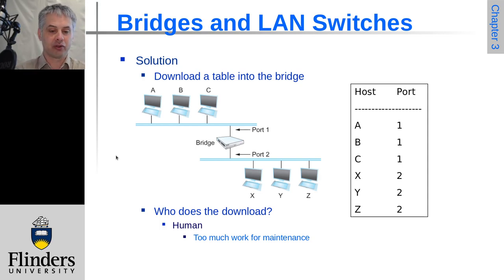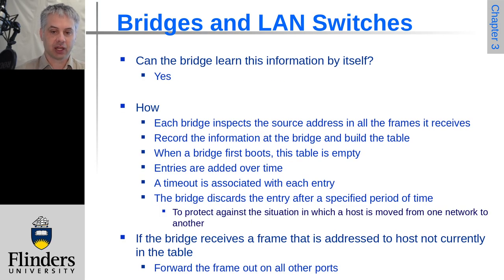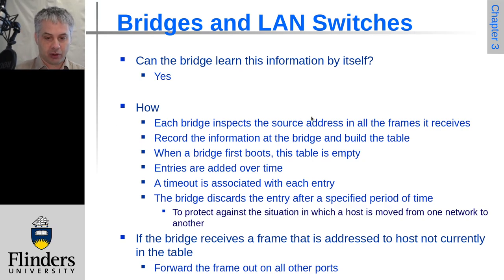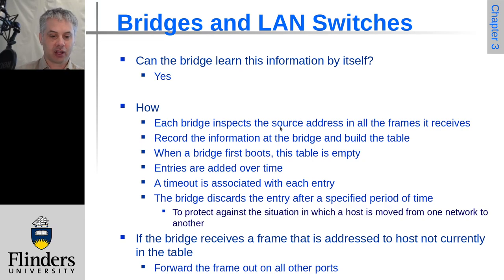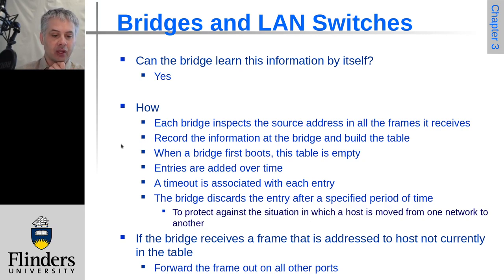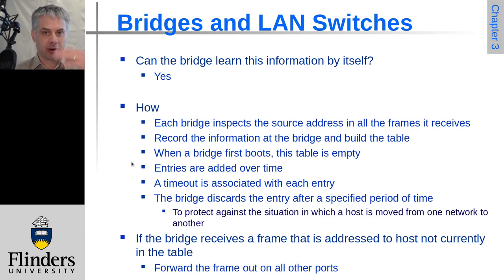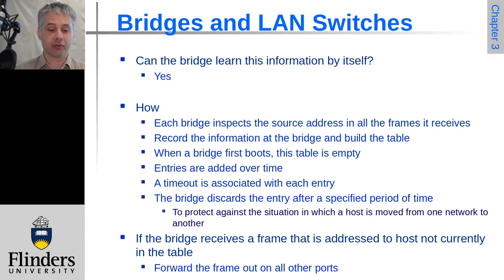A fixed table works perfectly, but it's a pain to maintain because whenever a host moves, is added, or removed you have to update the table on the bridge. The bridge actually has all the information it needs already. If the bridge looks at the source address in every frame, it can record which port that source came in on, and build a table of where each device is. The first time a node sends a frame the bridge learns about it, and a timeout ensures that if a node moves it will be removed or updated to the correct port quite quickly.